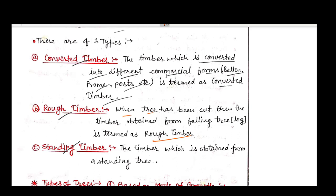Third is standing timber, which is obtained from a standing tree. This means the tree from which timber is to be extracted is known as standing timber. Apart from this, there are different types of trees from which timber is extracted.